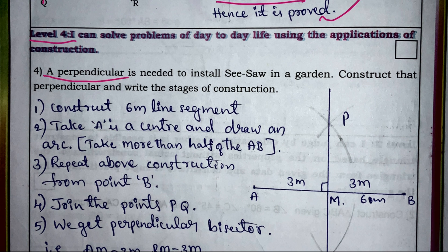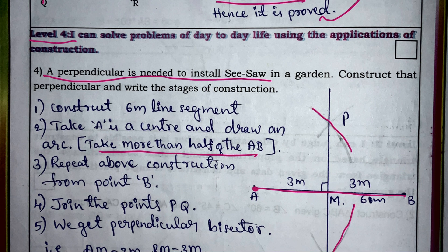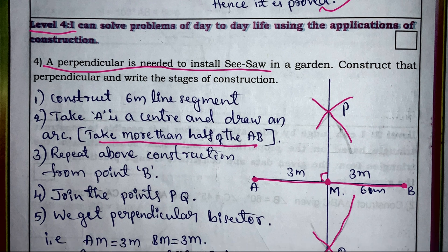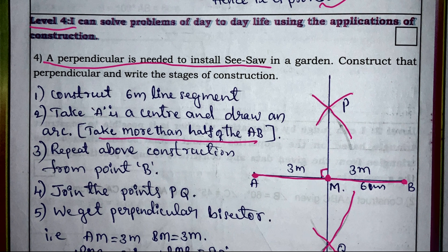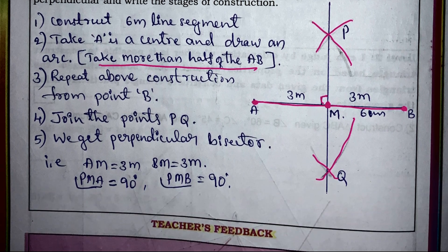Next: perpendicular bisector. Take a line AB = 6 cm. Taking A as center, draw an arc of more than half of AB above and below the line. Taking B as center, draw another arc — they cross at two points. Join those points to get the perpendicular bisector, which is always at 90° to AB and passes through the midpoint. This is the construction of a perpendicular bisector — useful for installing a seesaw in a playground.